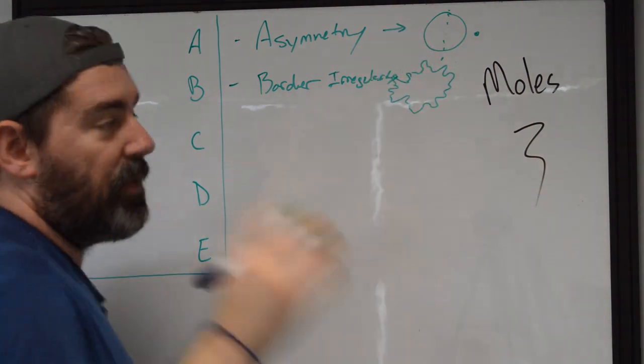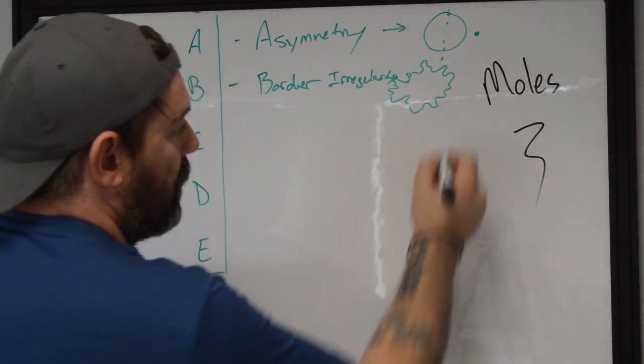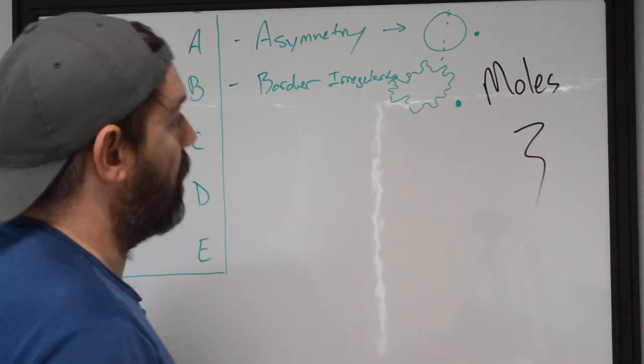And they're not symmetrical. Then we know that we really need to take a chance to make a mark. Take a picture and try to keep track of it.